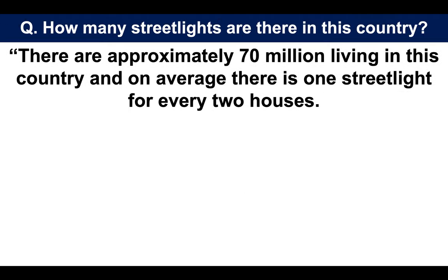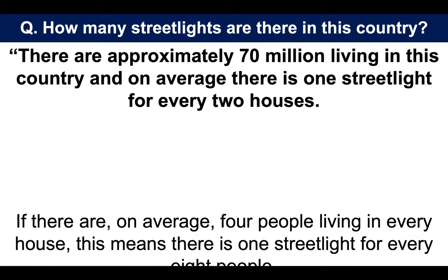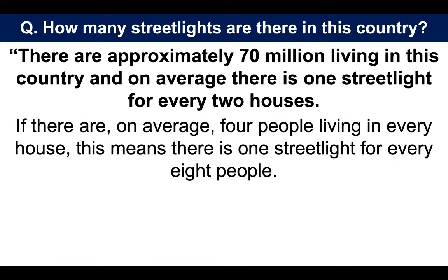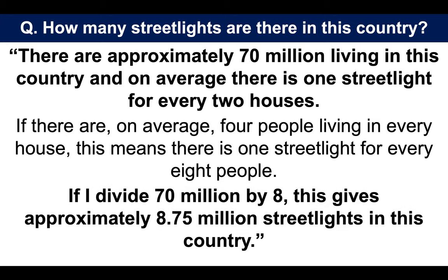How many streetlights are there in this country? There are approximately 70 million people living in this country, and on average there is one streetlight for every two houses. If there are on average four people living in every house, this means there is one streetlight for every eight people. If I divide 70 million by eight, this gives approximately 8.75 million streetlights in this country. Of course, that's not the exact correct answer — my country is the United Kingdom — however, that shows that you can apply logic to different situations and you can think on your feet.